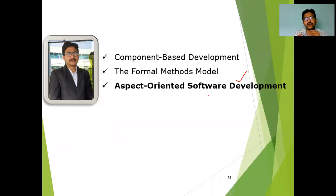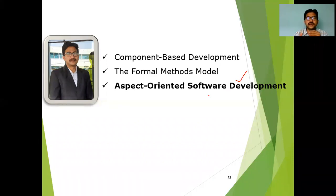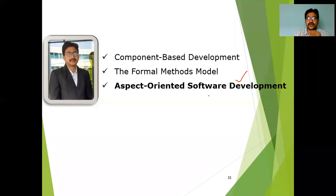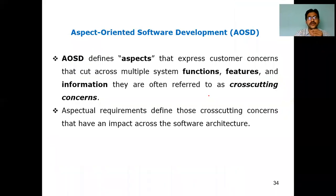For example, if you want to create an object for a classroom, you are creating a class object. If you are creating an object for a student class, you are creating a student class object. In the same fashion, aspect oriented means it deals with specifics related to software development. In short, it is called AOSD.